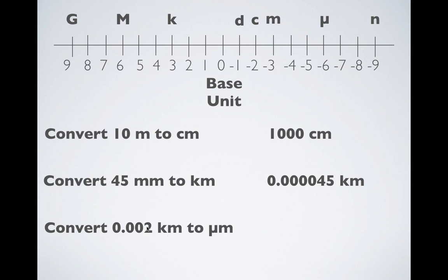This one's ridiculous, but convert 0.002 kilometers to micrometers. So I start here. I got to get all the way over here. So let's jump. I got 1, 2, 3, 4, 5, 6, 7, 8, 9. I got to move it 9 spaces. In which direction did I move? I moved to the right. So I got to move this 9 spaces over. 1, 2, 3, 4, 5, 6, 7, 8, 9. That would be this. So that's 1, 2, 3. So that's 2 million micrometers. So hopefully that made sense. If you have any questions, make sure you let me know. Otherwise, that's the end of the lesson.